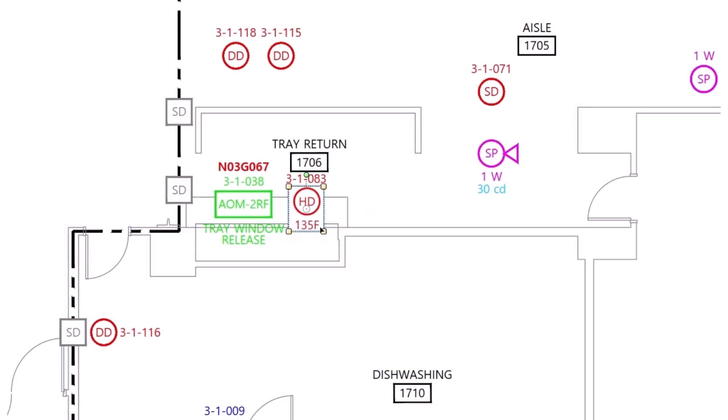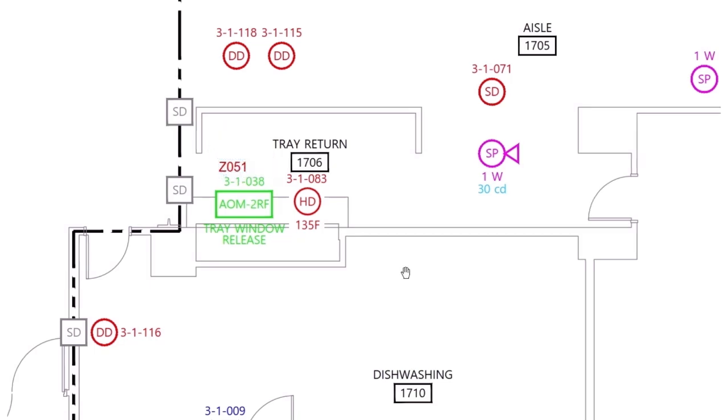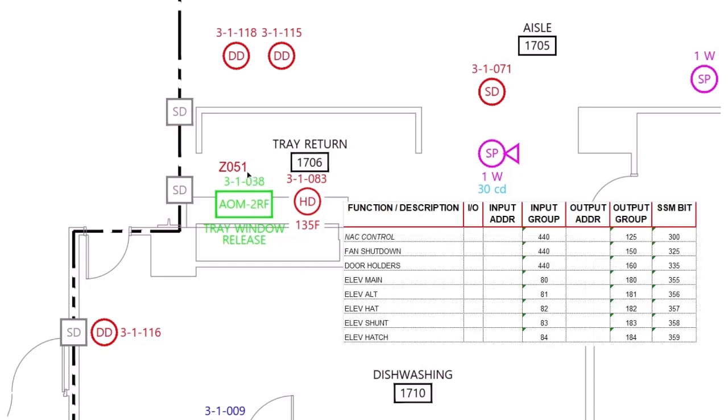And this system was originally programmed in a GameWell FCI product. So it's showing the groups here in their format. We're going to be talking about a Notifier 3030. So we're going to be using zones. And so we'll assign a zone to the control module for the shutter release. Now, it's a good idea, as said in previous videos, keep yourself a spreadsheet of your groups or zones, depending on what you're programming and what their purpose is, so that you can reference them and link them up to the correct inputs and outputs.